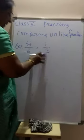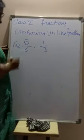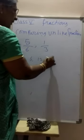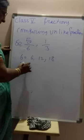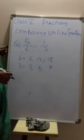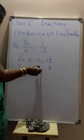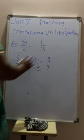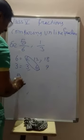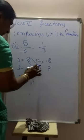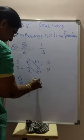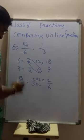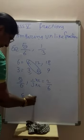These are small denominators; you can take multiples. Write multiples of 6: 6, 12, 18... Then multiples of 3: 3, 6, 9... The smallest common multiple is 6. Both denominators are now equal. Converting: 1 by 3 becomes — 3 times 2 is 6 — so multiply numerator by 2 as well. We get 5 by 6 and 2 by 6.